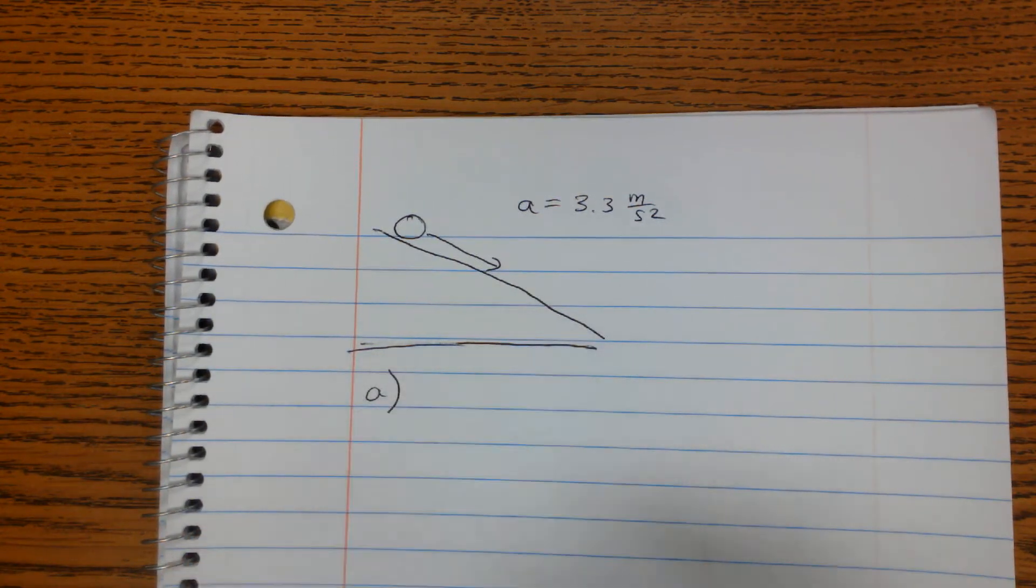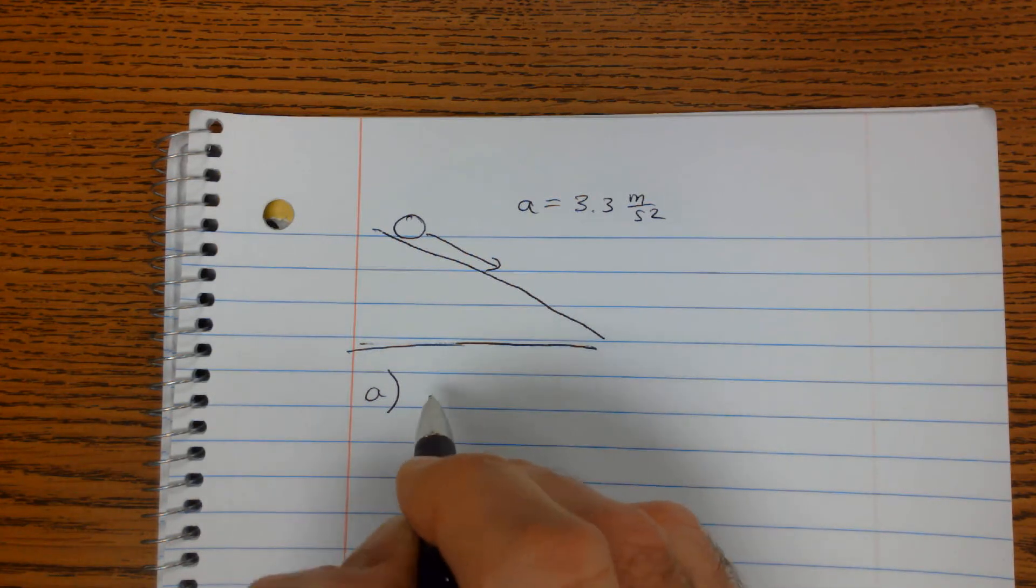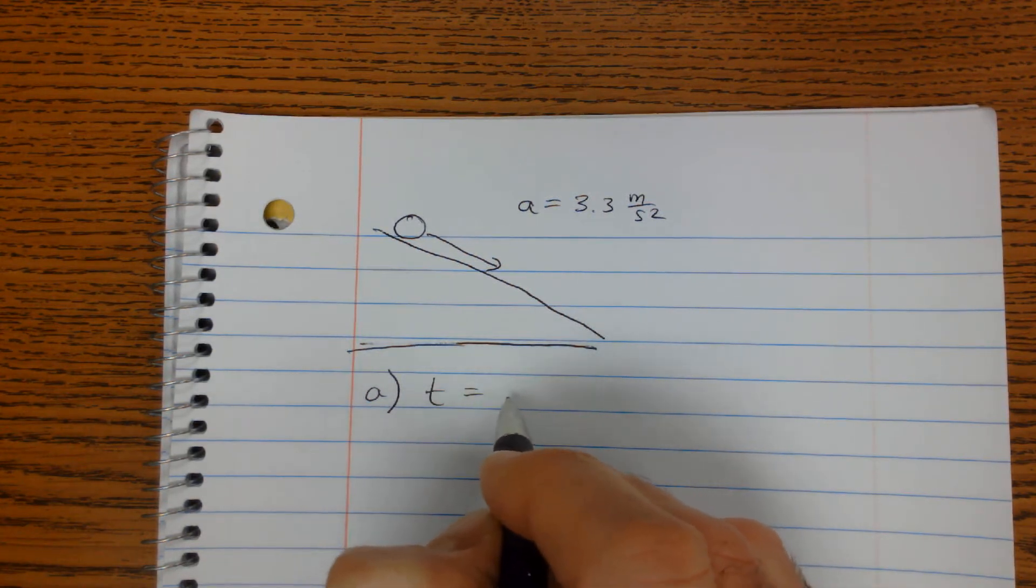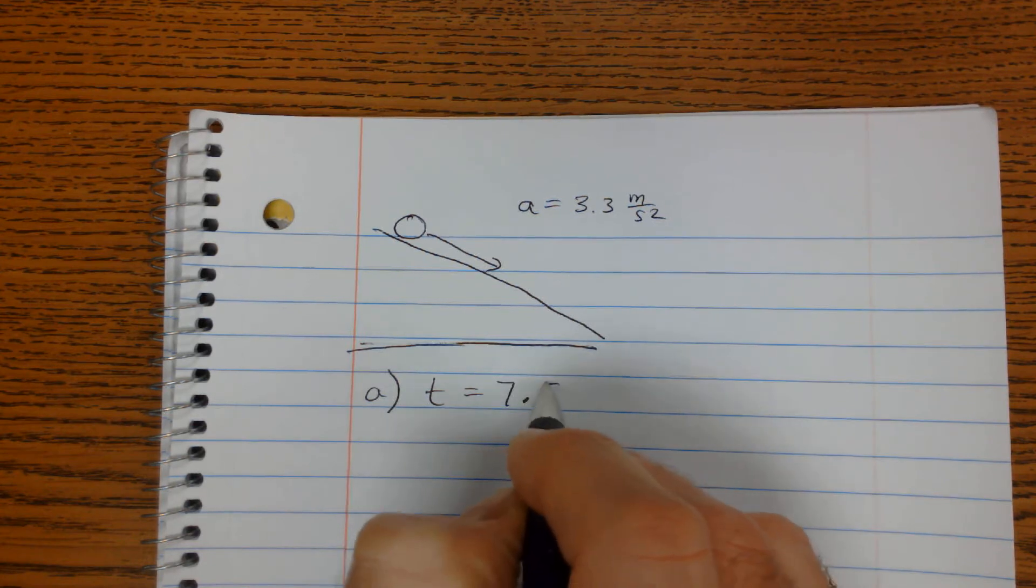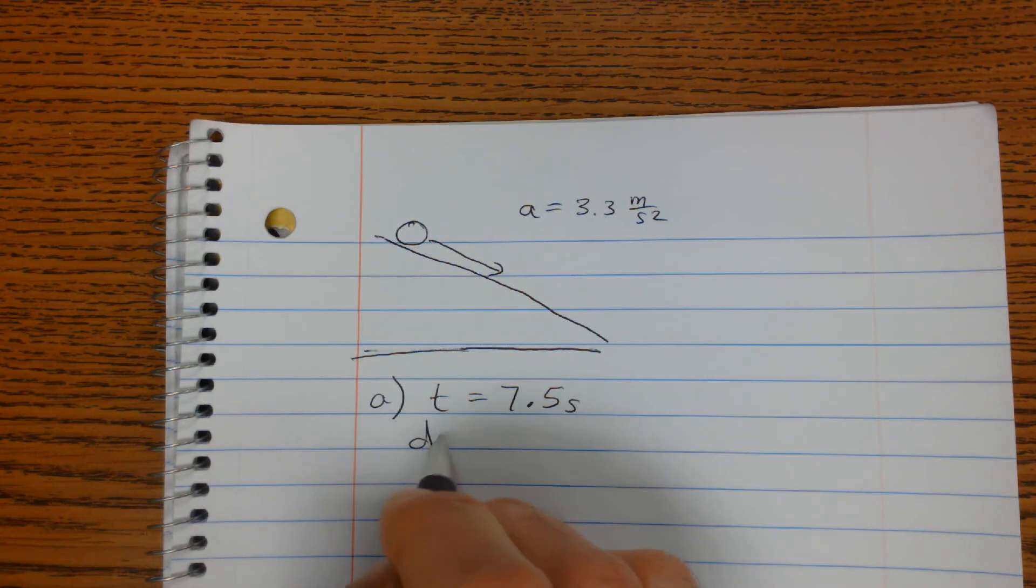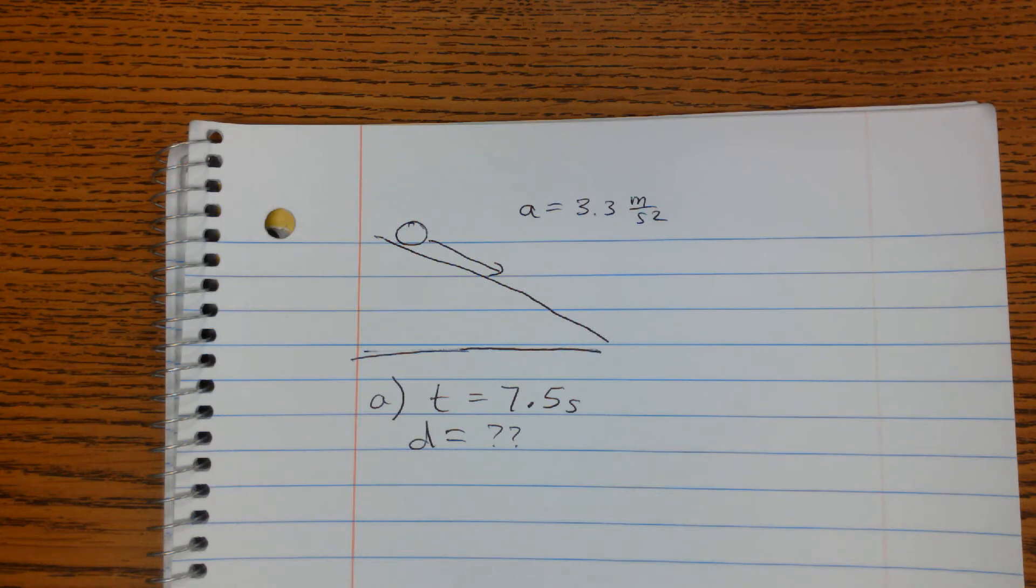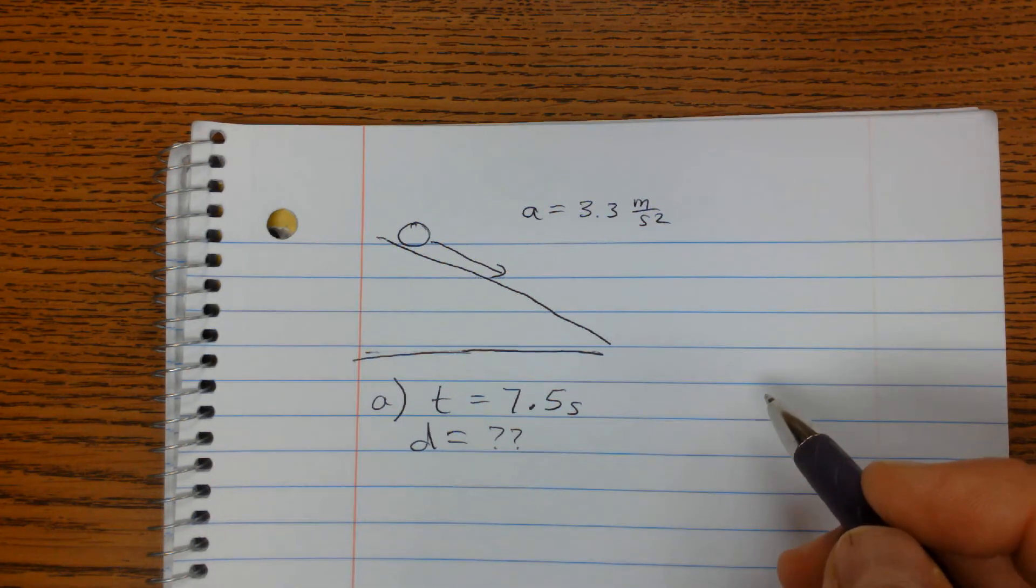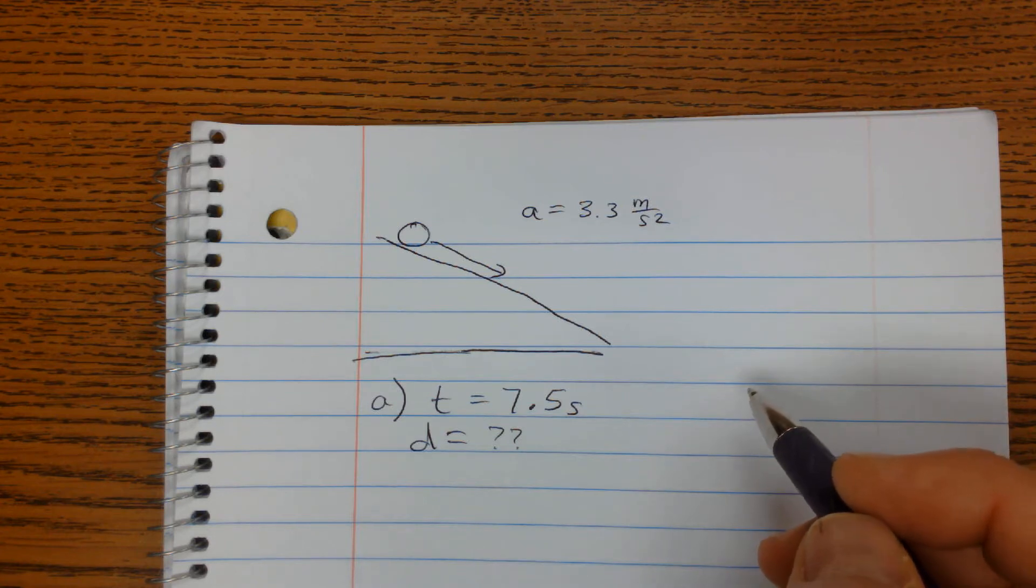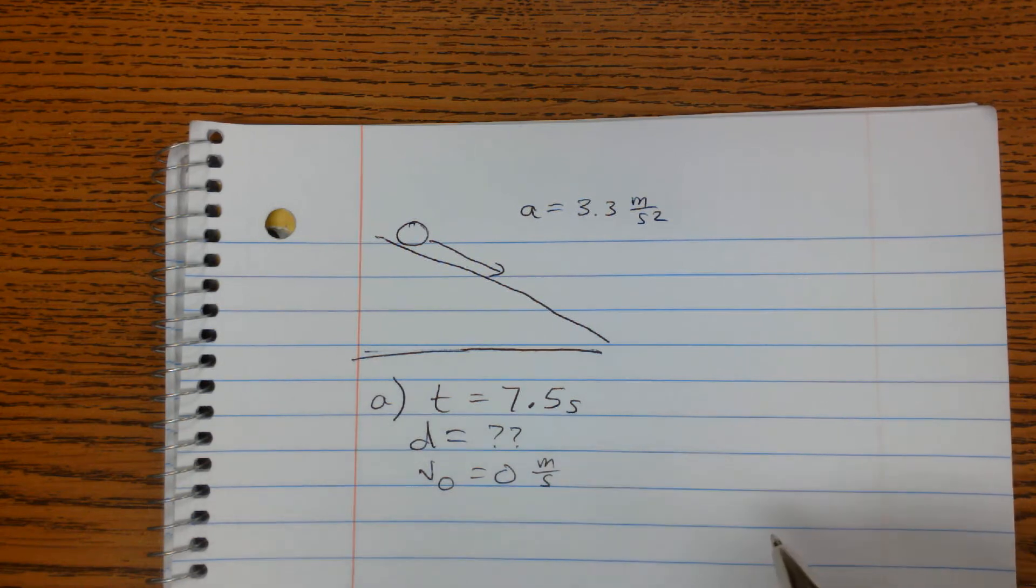Then part A asks us to find if it accelerates for 7.5 seconds, so I know the time is 7.5 seconds, how far or what's the distance that will move down the hill? We only have one other piece of information, and that was that this object was at rest when it started. So we know that the initial velocity is 0 meters per second.